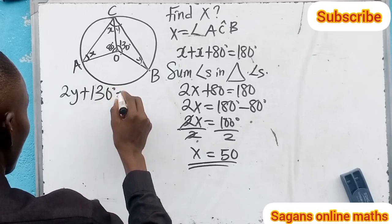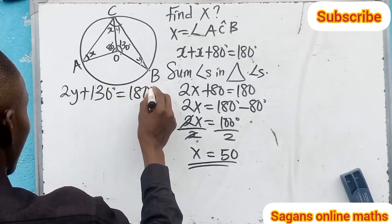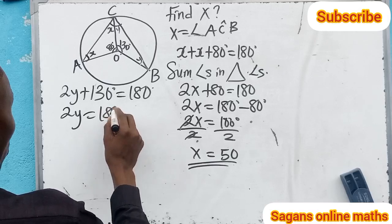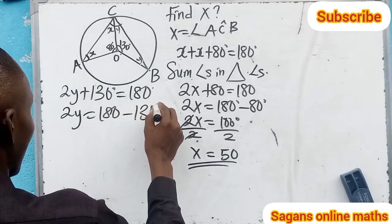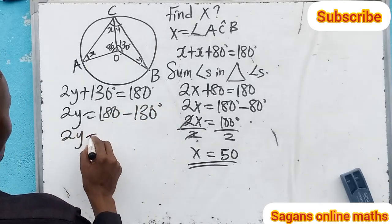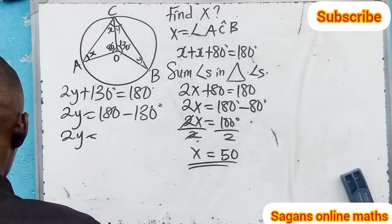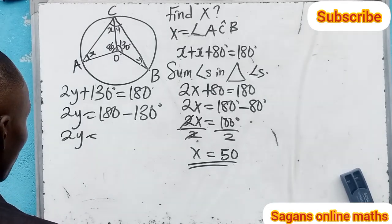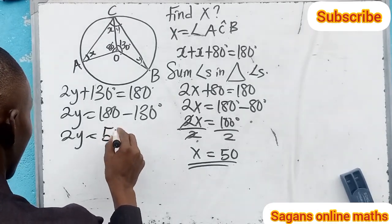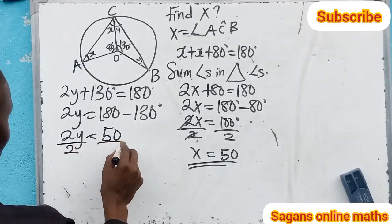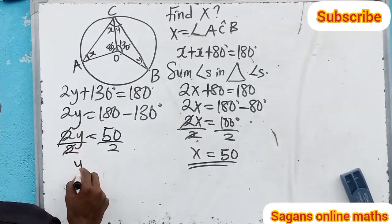That means 2y equals 180 minus 130 degrees, and 2y equals 50 degrees. So if you divide here by 2 and divide here by 2, then our y equals 25 degrees.